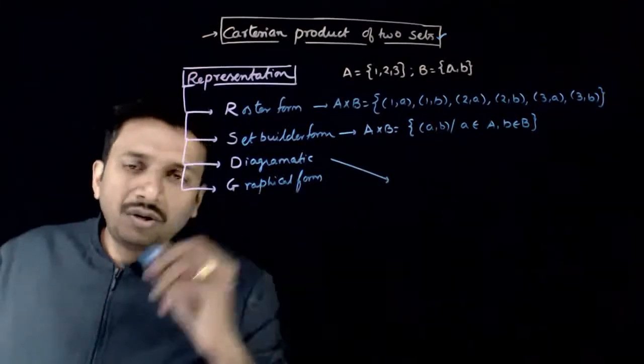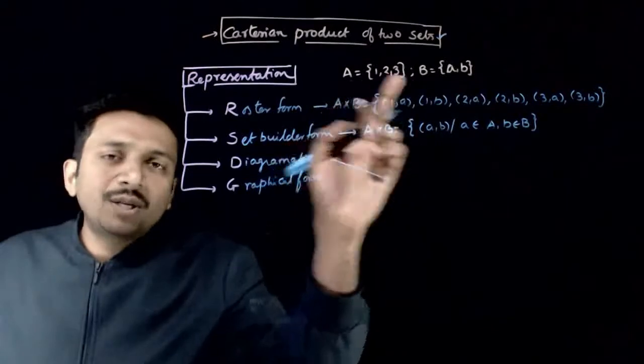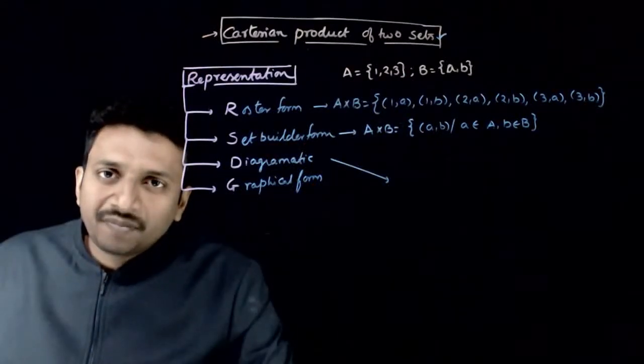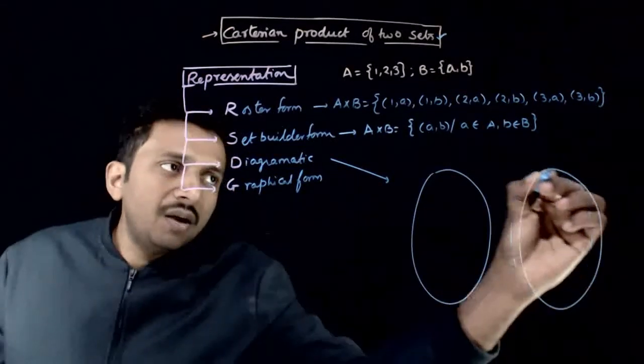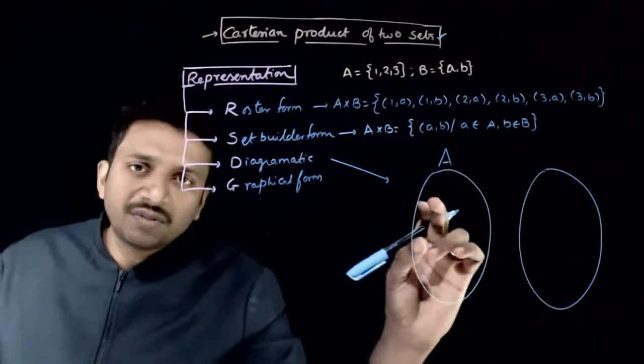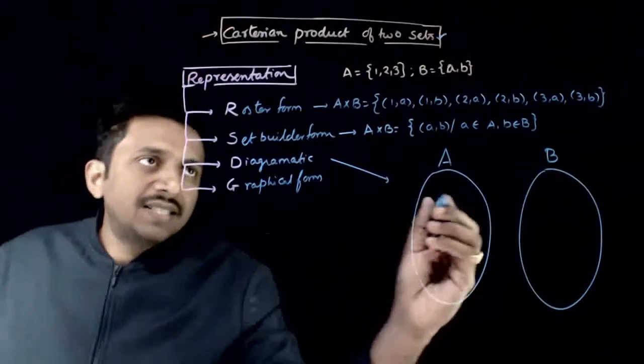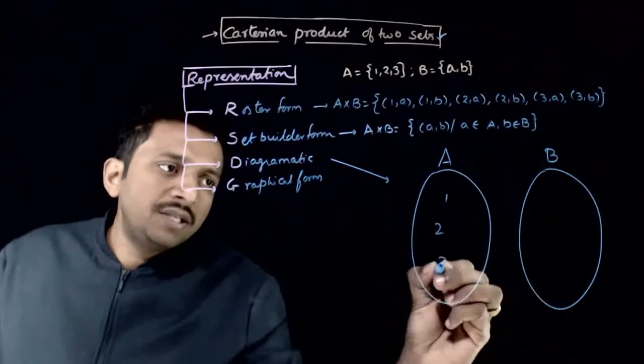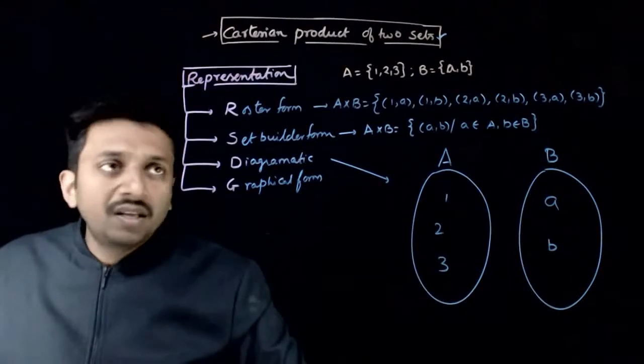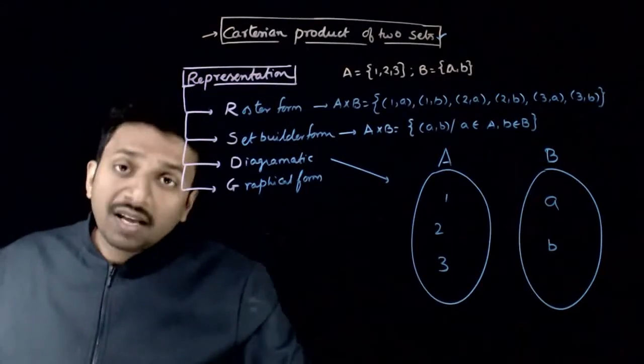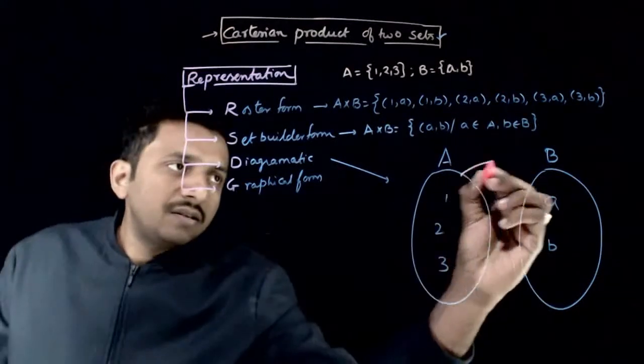Next, these are the new types of representations that you have. How do we represent A x B diagrammatically? So, now, I represent sets using ovals. Let us say that this first oval represents Set A, the second oval represents Set B. And Set A contains the elements 1, 2, 3. Set B contains the elements A and B. Now, A x B connects the elements of A with the elements of B.